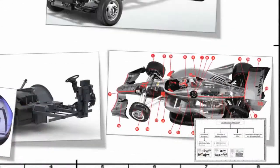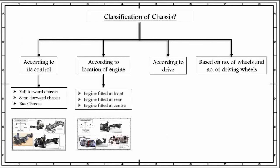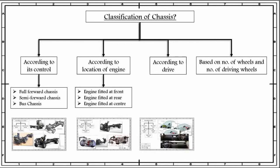Going back towards the classification of chassis — we have discussed classification based on control, and based on location of engine: engine fitted at front, engine fitted at rear, and engine fitted at center. The next classification of chassis is according to its drive.